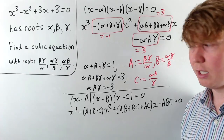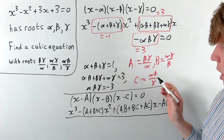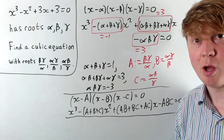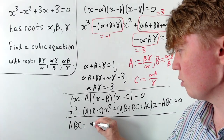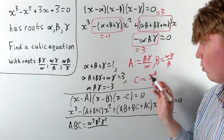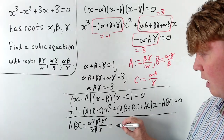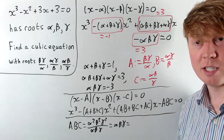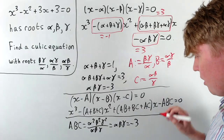We can get an easy win with ABC. If we multiply all three roots together, in the numerator we have beta gamma times alpha gamma times alpha beta, so each of alpha, beta, and gamma appears twice — giving alpha squared beta squared gamma squared in the numerator, divided by alpha beta gamma in the denominator. This cancels to give simply alpha beta gamma, which we know is negative three. So ABC equals negative three.